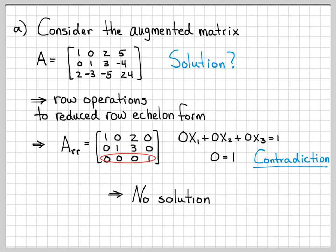Anytime you see all zeros and then a number in that final column — whether the number is 1, 7, pi, or square root of 4 — it doesn't matter what the number is. We end up with a contradiction of the form 0 equals a number, which is not correct. So be on the lookout for row-reduced augmented matrices that have this form.